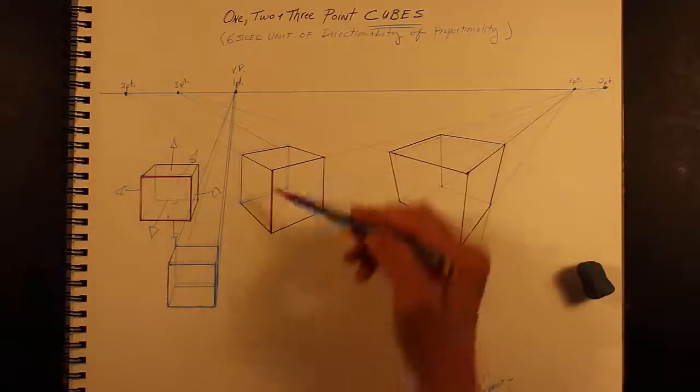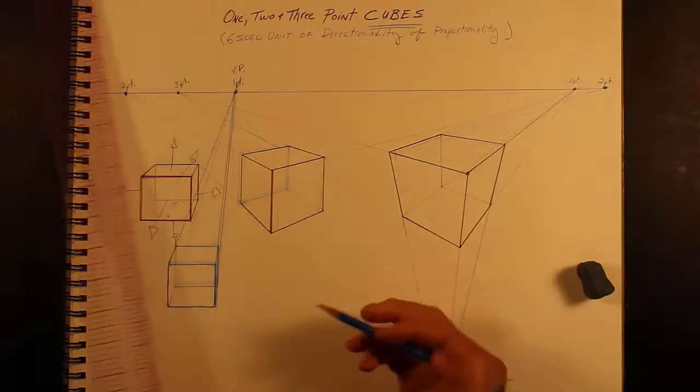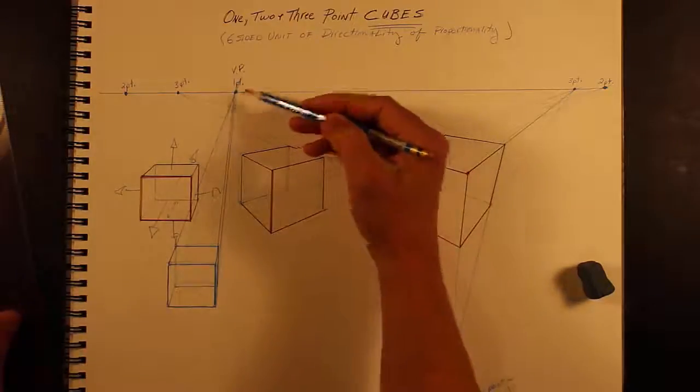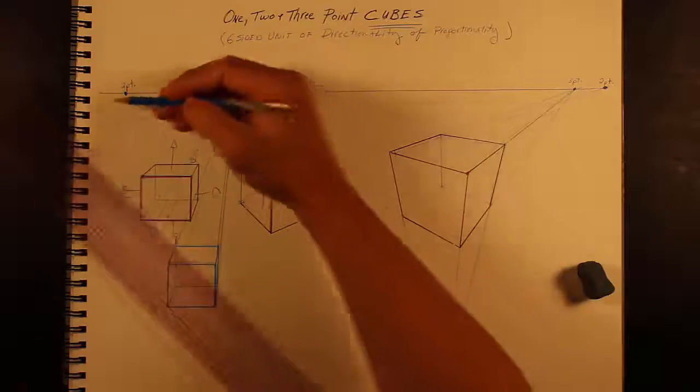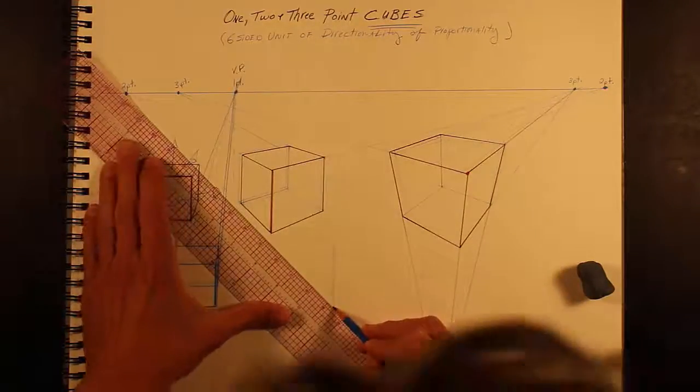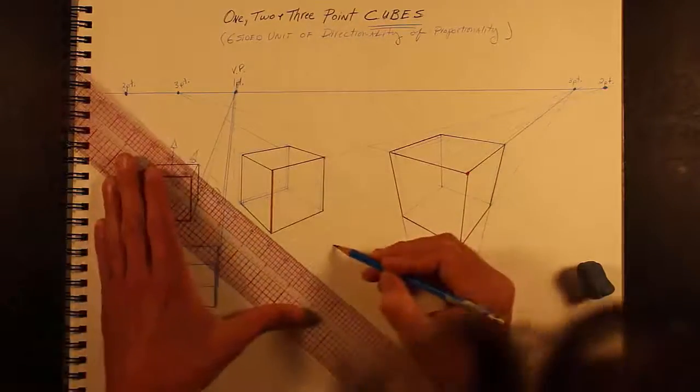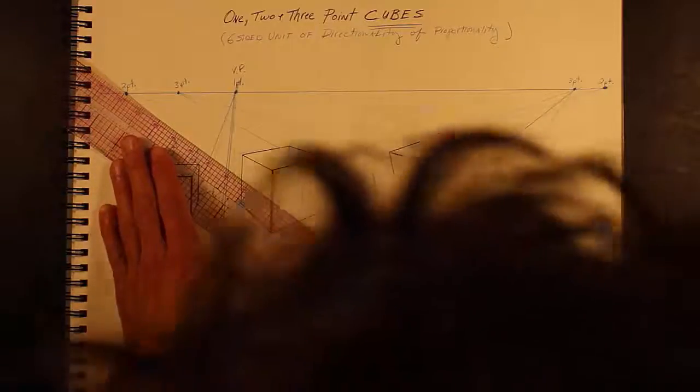Two point, you start with a vertical line like that. So again, just estimate a vertical point. Here's my two points. You don't always have to go all the way to it, just line it up.